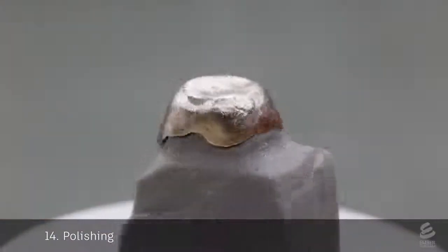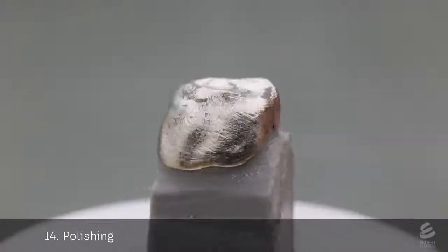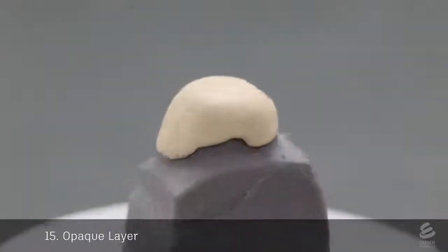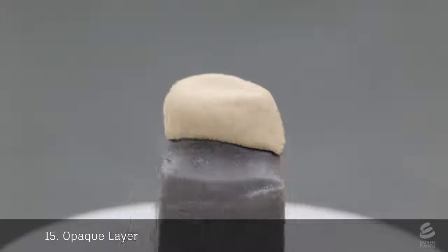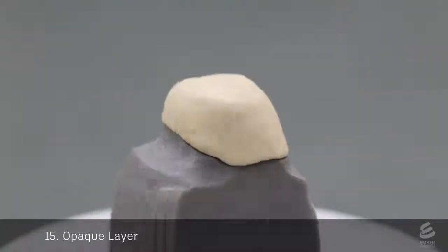This metal casting will form the substructure of the final crown. Next, an opaque layer is applied to the casting. It acts like a primer. It covers up the gray color of the metal and also increases adhesion with the porcelain layer.